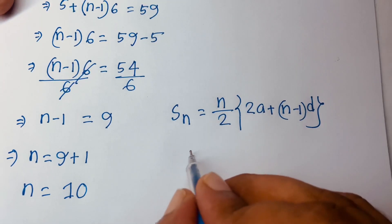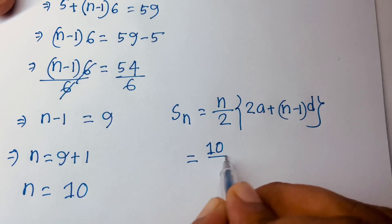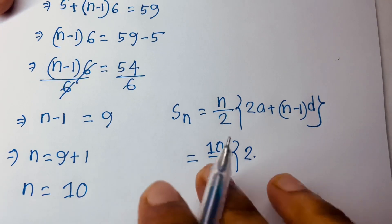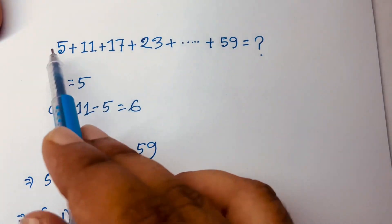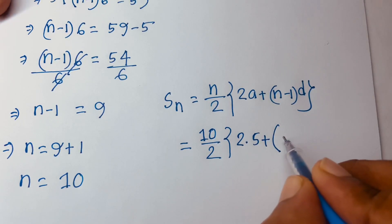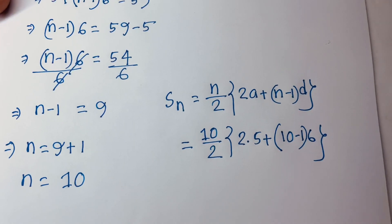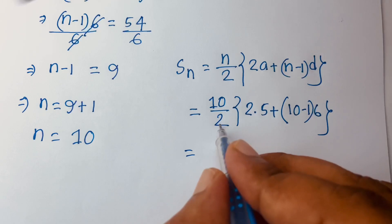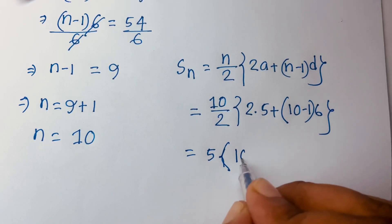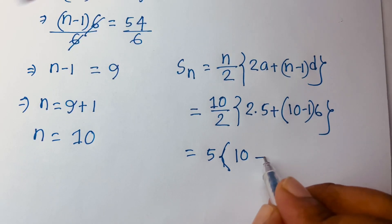Substituting the values: n is 10, a is 5, and d is 6. This gives us 10 over 2 times (2 times 5 plus (10 minus 1) times 6). That simplifies to 5 times (10 plus 9 times 6), which is 5 times (10 plus 54).